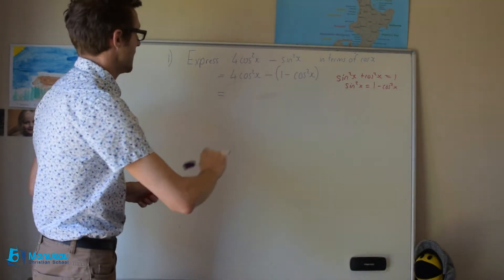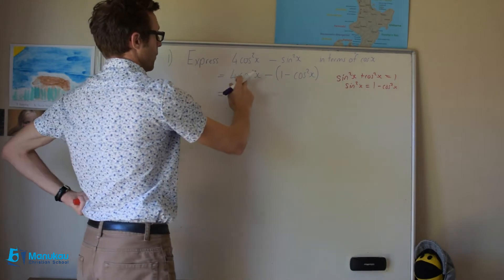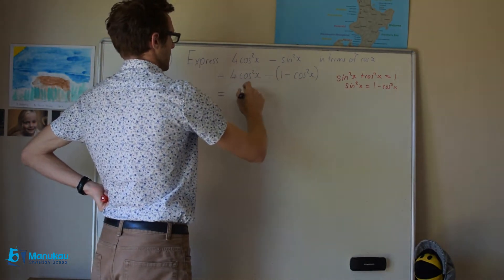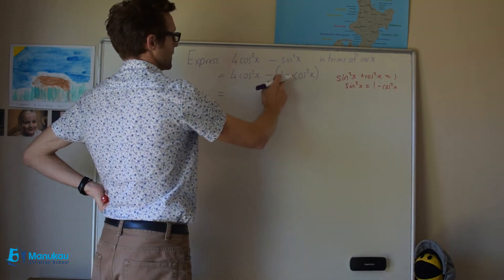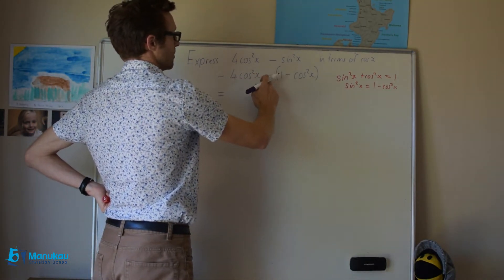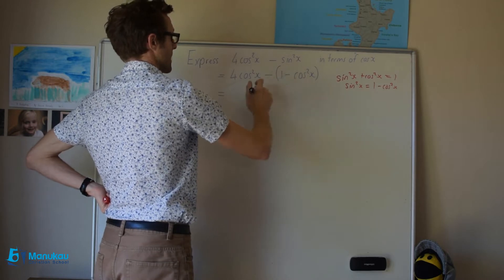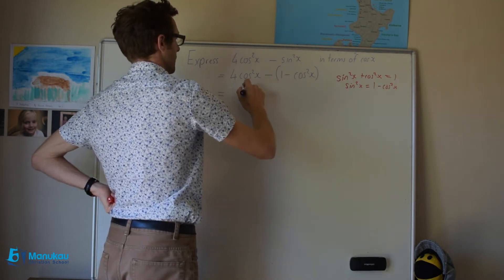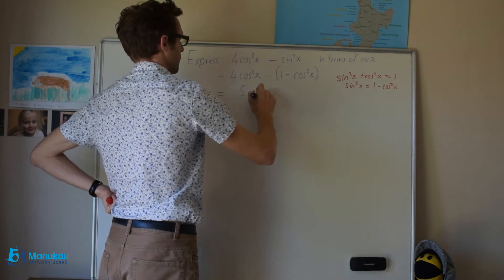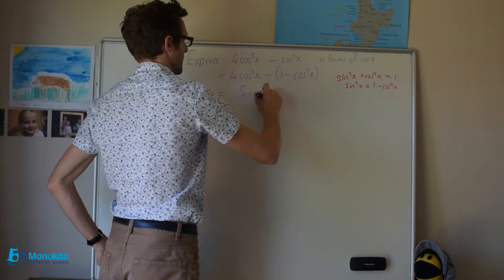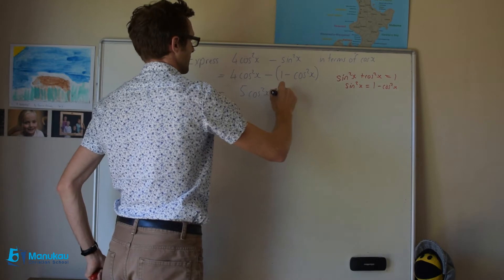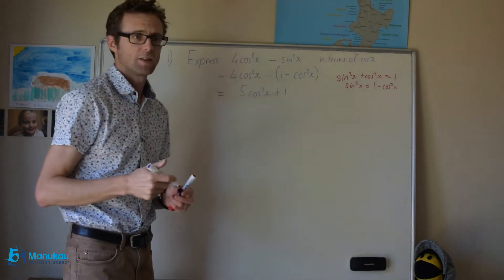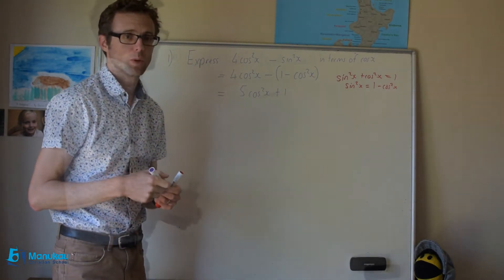Four cosine squared x minus one, and then minus minus cosine squared x — minus minus is a positive. So I end up with, as my final answer, five cosine squared x minus one. So that's the answer to the first one.